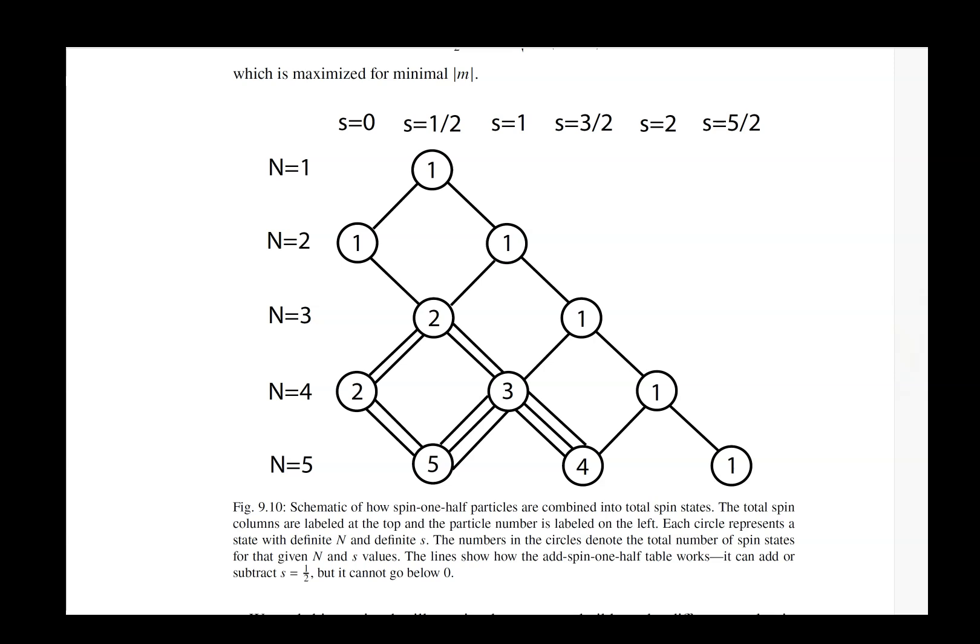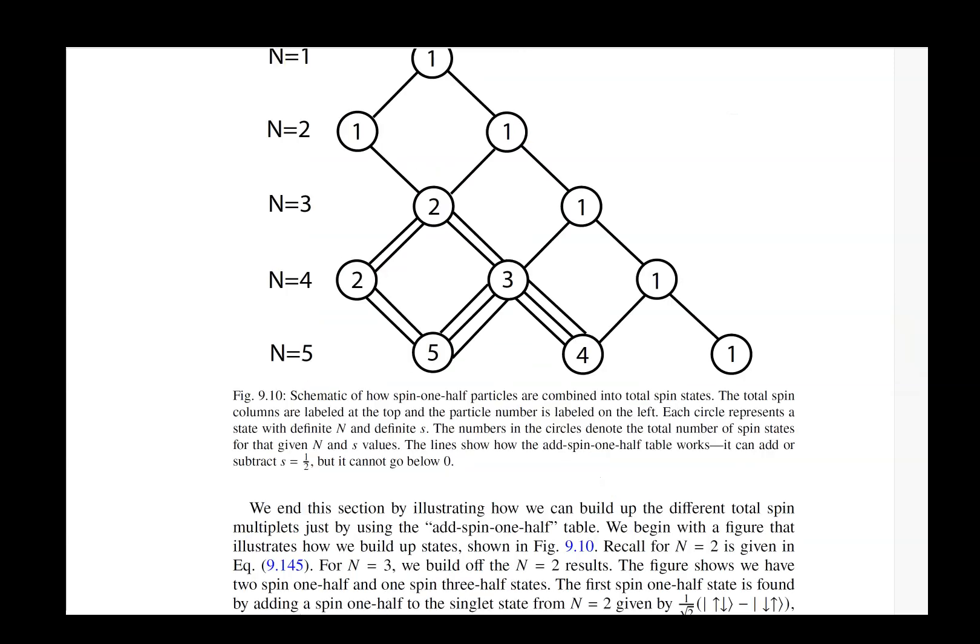It's not something that's an easy formula that you can just work out but by working through things like this diagram and knowing how you combine spin one half to a state that already has some higher value of spin allows you to think about the different features of how you do this construction and how to count and learn what the different numbers of states are.